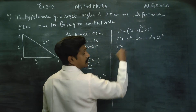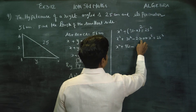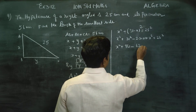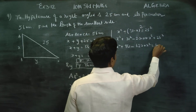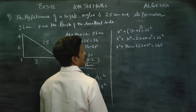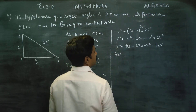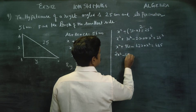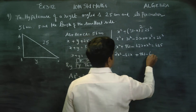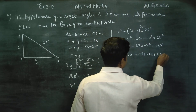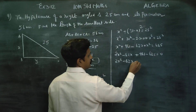Expanding: x² plus 31² minus 2 times 31 times x plus x² equals 25². That is x² plus 961 minus 62x plus x² equals 625. Combining terms: 2x² minus 62x plus 961 minus 625 equals 0, giving 2x² minus 62x plus 336 equals 0.